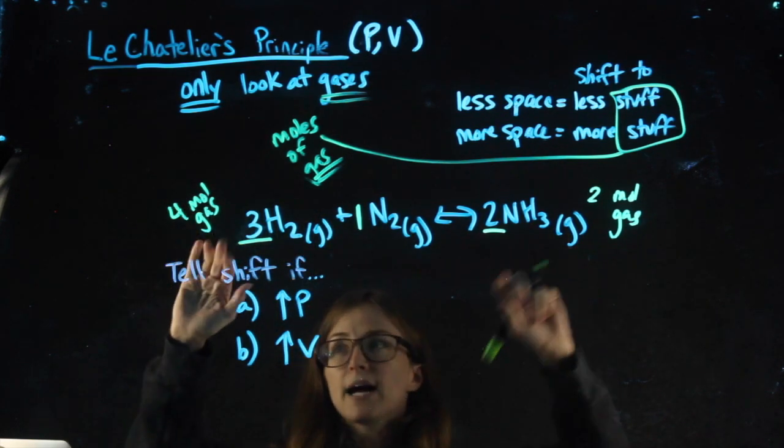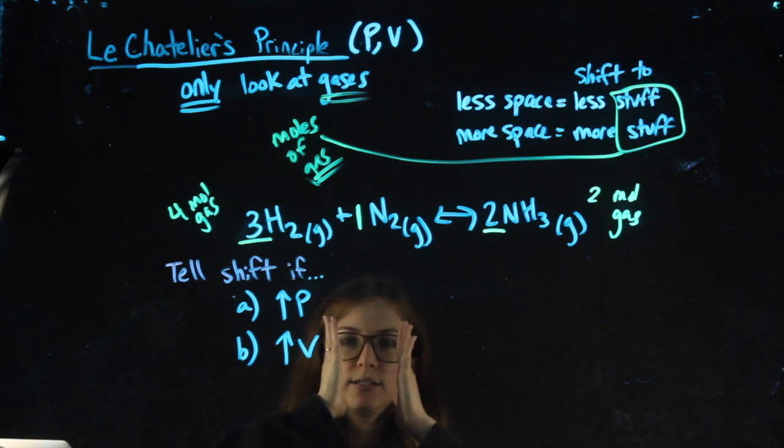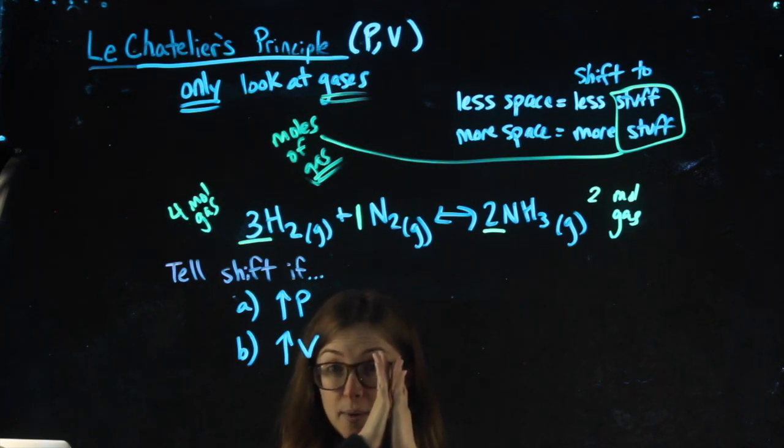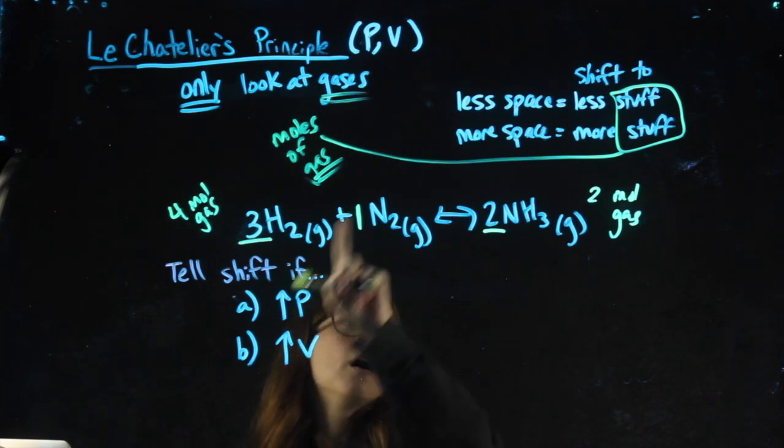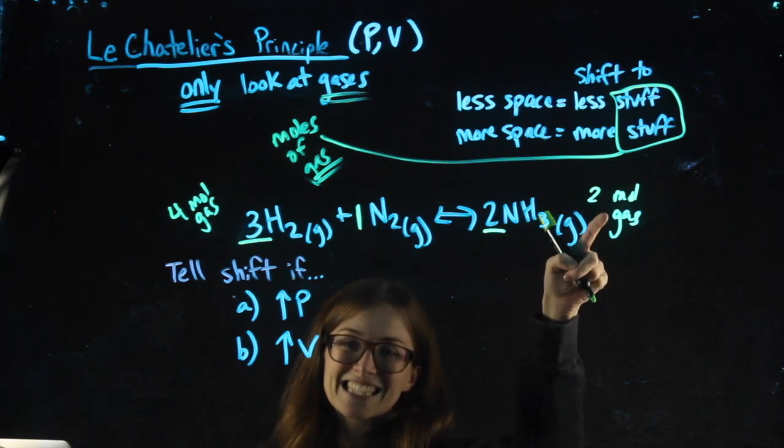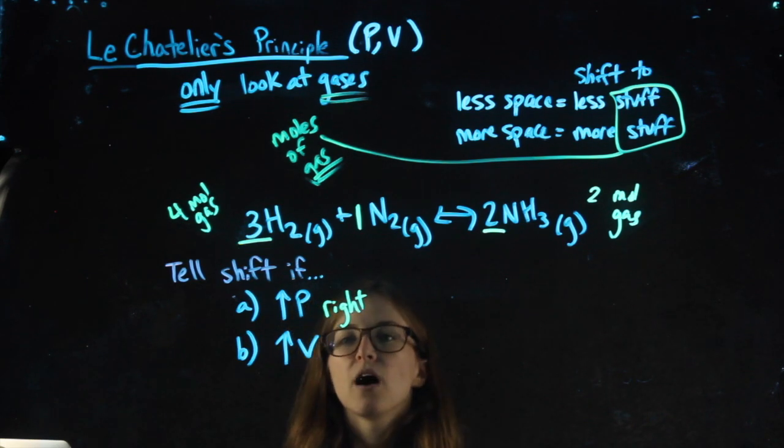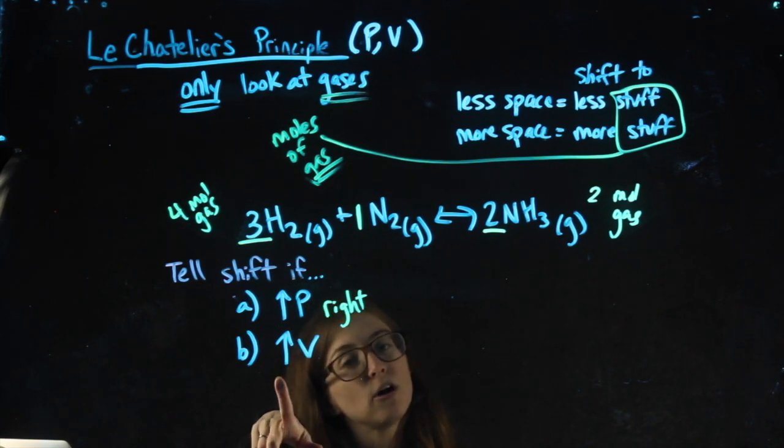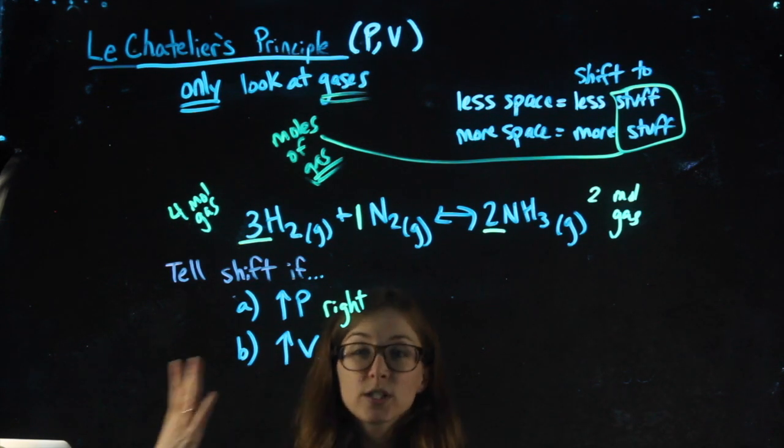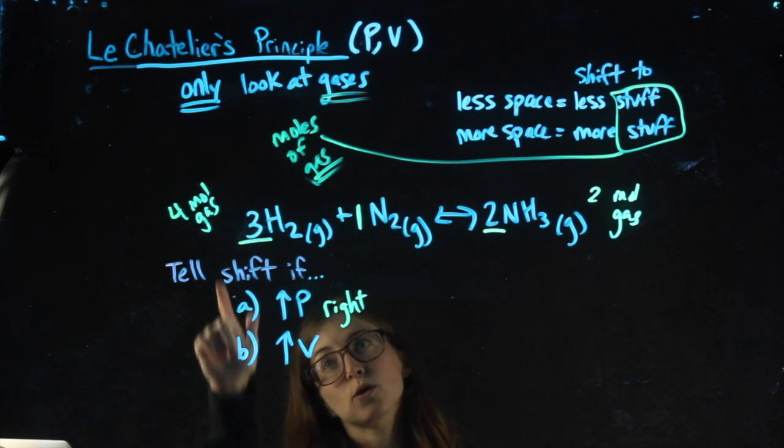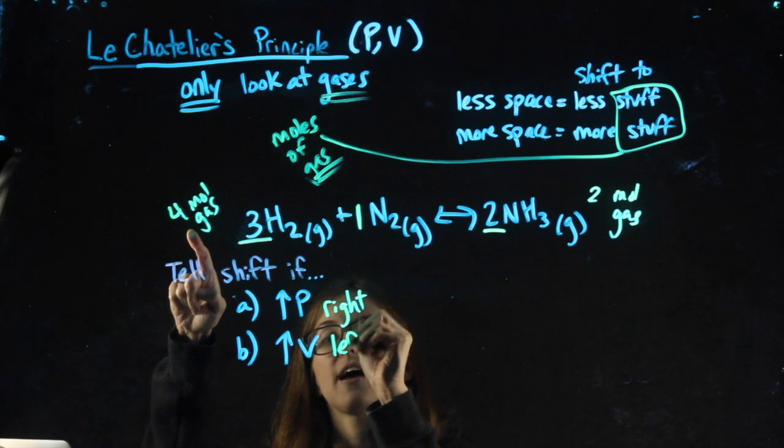So for this reaction, more stuff, less stuff. If I increase the pressure, now I have less space. I need to shift towards having less stuff. That's the less stuff side. So I would shift right. Whereas an increase in volume, increase in volume means I have more space. So I'm going to shift towards having more stuff on the left.